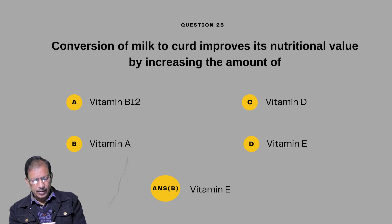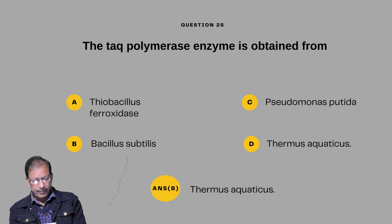Question number twenty-five: Conversion of milk to curd improves its nutritional value by increasing the amount of — the answer will be vitamin B12. Question number twenty-six: The Taq polymerase enzyme is obtained from — Thiobacillus peroxidans, Bacillus subtilis, Pseudomonas putida, or Thermus aquaticus. Answer is Thermus aquaticus.